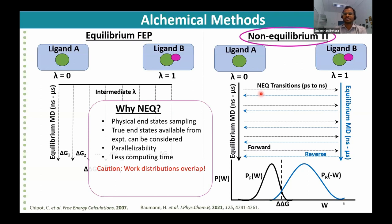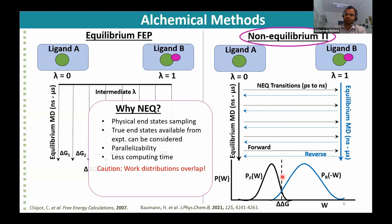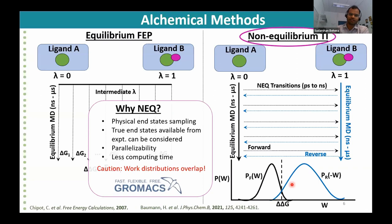Additionally, since NE-TI uses hundreds of short transitions they can be better parallelized than a few intermediate lambda windows. Reports also show NE-TI converges to a free energy estimate with less computational time than equilibrium FEP. However, one must be careful about work overlap: when perturbation is large, the forward and reverse work distributions may not overlap well, leading to inaccurate delta G values. Therefore it's important to always examine the work distribution overlap. All these simulations — equilibrium MD and non-equilibrium transitions — can be run using the GROMACS open source software.